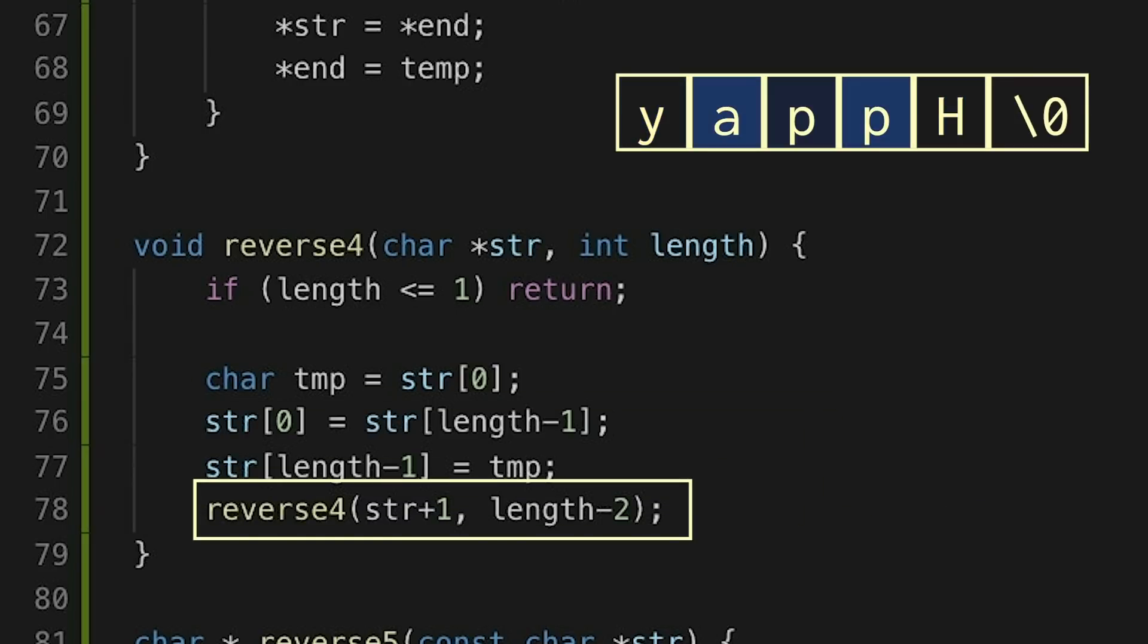And then the process starts all over again. We check to see if the length is 0 or 1, it isn't. So we swap the outside characters and call reverse4 on the inside rest of the string. And now it is only length 1, so we know we're done and we return.